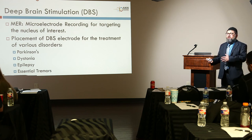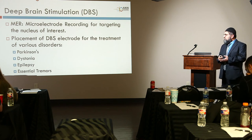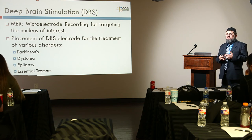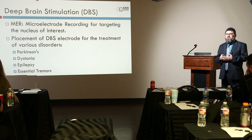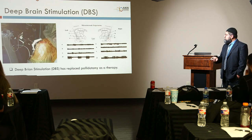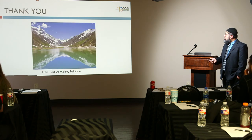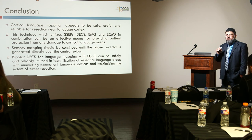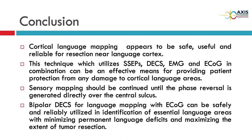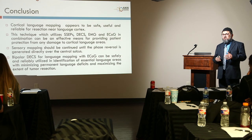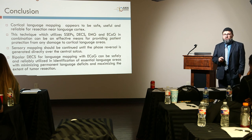For microelectrode recording in deep brain stimulation: patients with Parkinson's, dystonia, or epilepsy need targeting of a specific nucleus. For Parkinson's, you target the subthalamic nucleus; for dystonia or essential tremor, you target the VIM. We record single-unit activity, confirm the target, then remove the recording electrode and place the stimulator. An important reference point: every 1 mA of stimulation current corresponds to approximately 1 mm of distance from the corticospinal tract or language area. If you get a motor or speech response at 5 mA, you are approximately 5 mm from that structure.